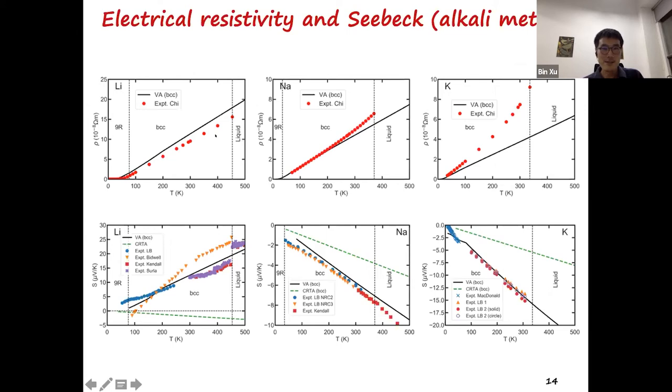And then we calculate the resistivity only using the variational approach because the constant RTA cannot give us rho without tau. As you can see, for lithium, the agreement is very good. For sodium and potassium, the resistivity have good agreement at low temperature, but at high temperature, there's some underestimation, especially for potassium. And the bottom three figures are for the Seebeck coefficient. And for all the three metals, you see the black solid lines of the variational approach calculated Seebeck. They have good agreement with experiments. For lithium, it's positive. For sodium and potassium, they are negative. The green dashed lines are from the constant RTA approach. For lithium, I mentioned earlier, it predicts the wrong sign. However, for sodium and potassium, the constant RTA give us the right sign, which are negative, but the magnitudes are much underestimated.